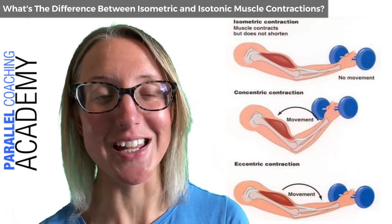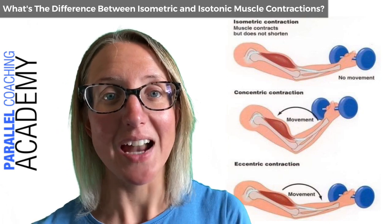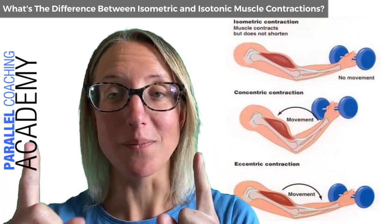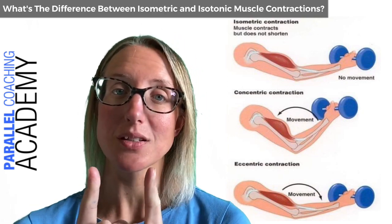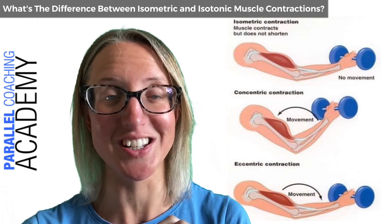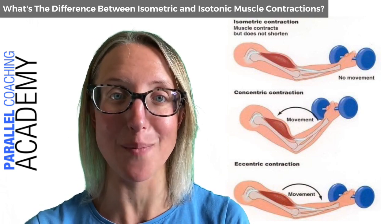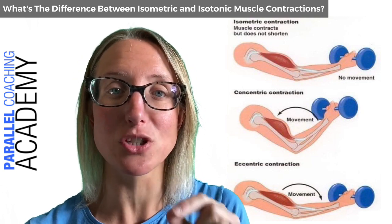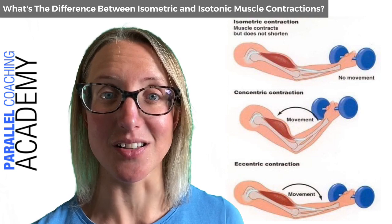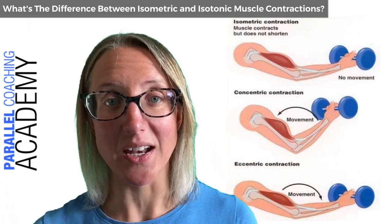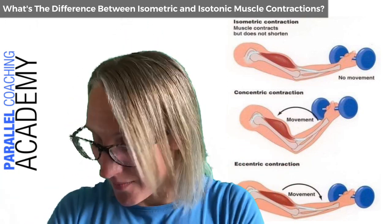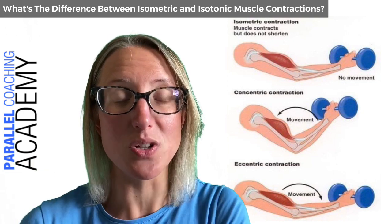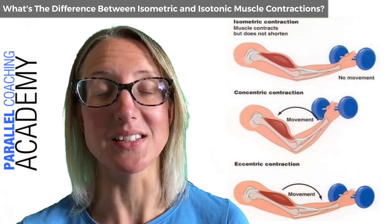A concentric contraction is one of the isotonic types of muscle contractions, whereby the muscle is contracted and switched on, but the insertion is getting closer to the origin — which means it's shortening. This is really important because this is the main thing that happens to a prime mover in any exercise in the concentric phase. For example, doing a bicep curl and lifting the dumbbells up against gravity — the bicep contracts and gets shorter as you lift that dumbbell up towards the ceiling.